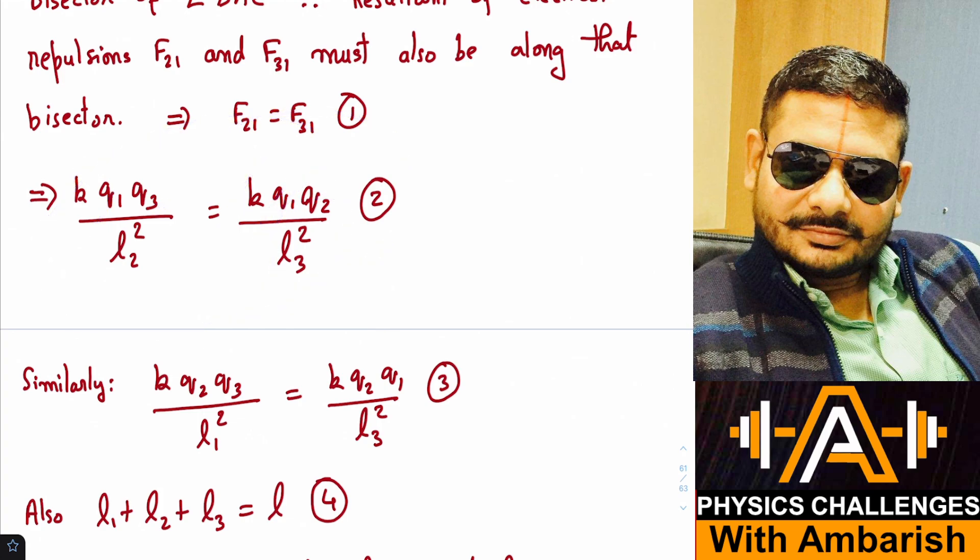Similarly, we can do this for the other two beads also. You just need to do it for one more bead because we have length conservation equation that is L1 plus L2 plus L3 is equal to L. And this is for charge Q2. So K Q2 Q3 by L1 square is equal to K Q2 Q1 by L3 square. Again, you can cancel K Q2 and K Q2. So Q1 by L3 square is equal to Q3 upon L1 square.